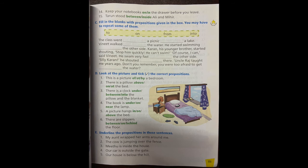Number one: my aunt wrapped her arms around me. Where is it? Around. Underline around. The cow is jumping dash the fence, over the fence, over the fence. Over, underline. Mewtwo is inside the house. Where is the position of Mewtwo? Inside the house. So inside is the position, underline it.